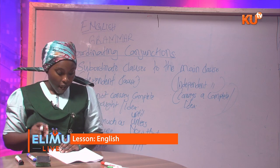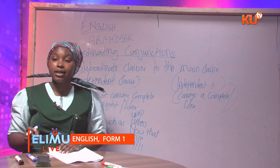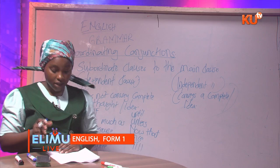Now let's see how we use these subordinating conjunctions in sentences and how we link dependent clauses with independent clauses.